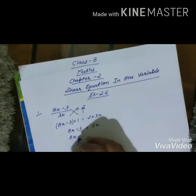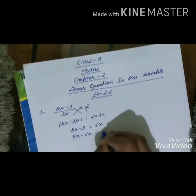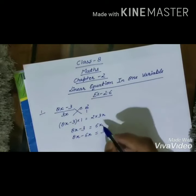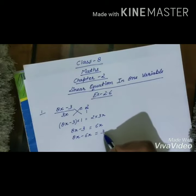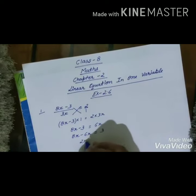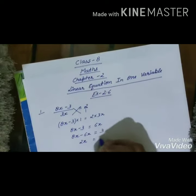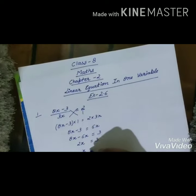For this, we need to transpose 6x to LHS and -3 to RHS. After transposing, we will get 8x - 6x = 3. As we know, after transposing the sign will get changed, so +6x is converted into -6x and -3 is converted into +3. After solving, 8x - 6x = 2x = 3. Now we will transpose 2 to RHS, giving x = 3/2.